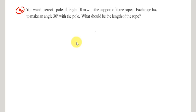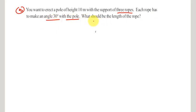Hi friends, welcome to JSI Mass Academy. We are going to discuss the fifth problem of Exercise 12.1, which is an application of trigonometry. We want to erect a pole of height 10 meters with the support of three ropes, and each rope has to make an angle of 30 degrees with the pole. What should be the length of the rope?